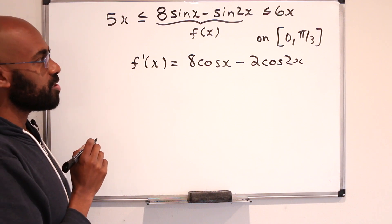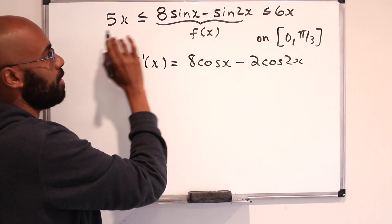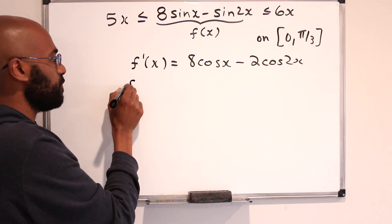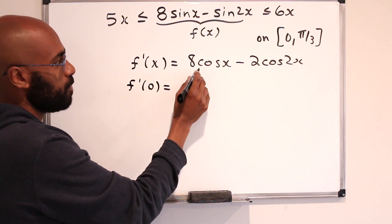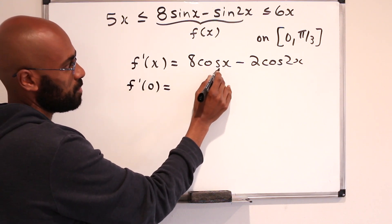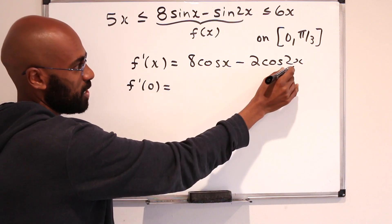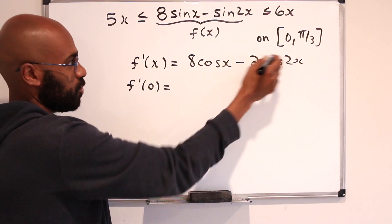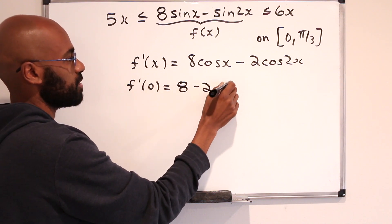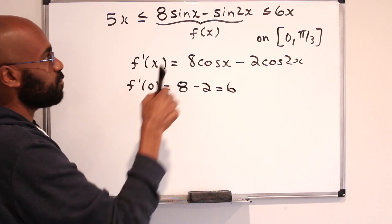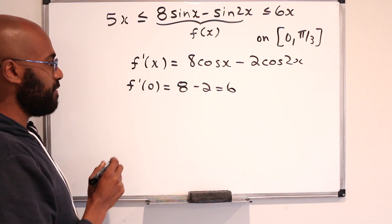The first interesting observation is what happens when we take the derivative and evaluate it at 0. We get 8 times cos(0), which is 1, minus 2 times cos(0), which is also 1, giving us 8 minus 2, which is 6. That's one of the coefficients appearing in our inequality.